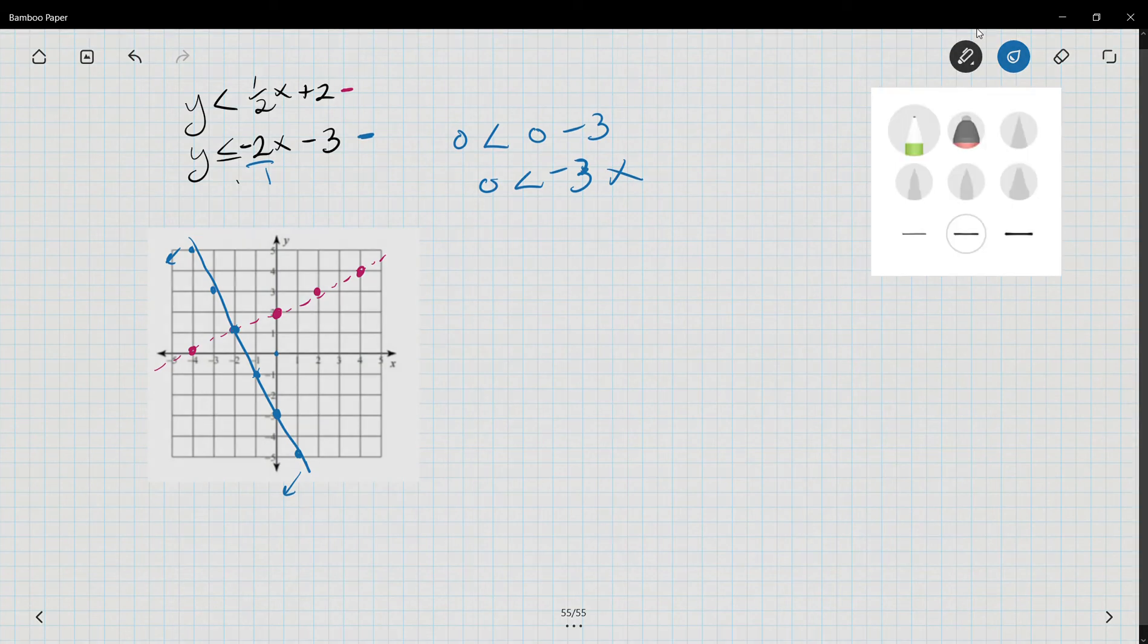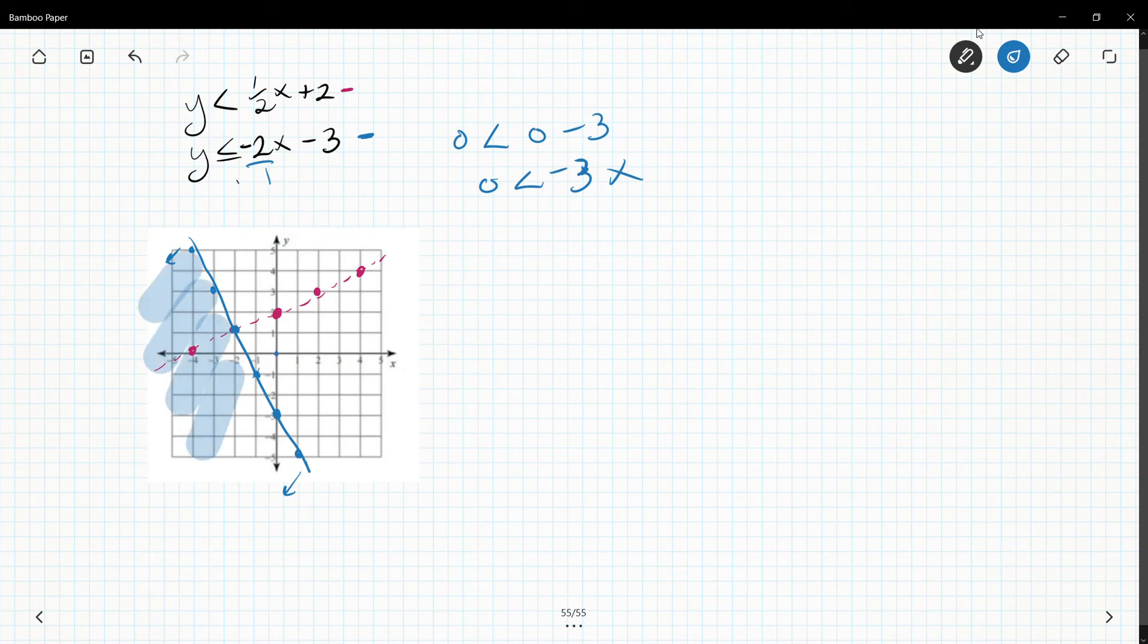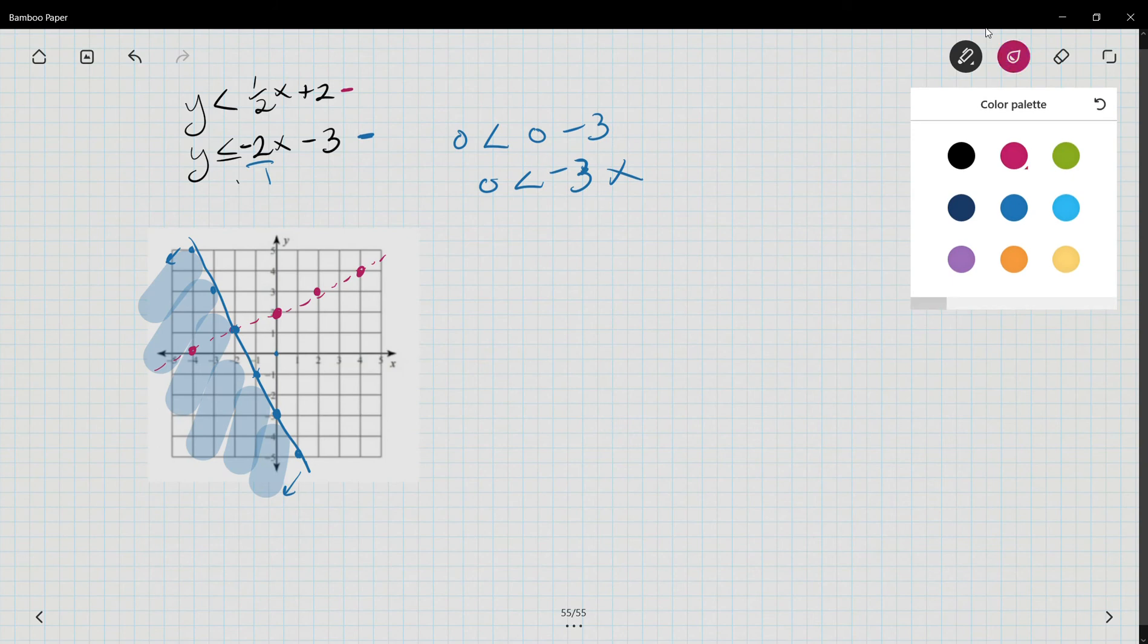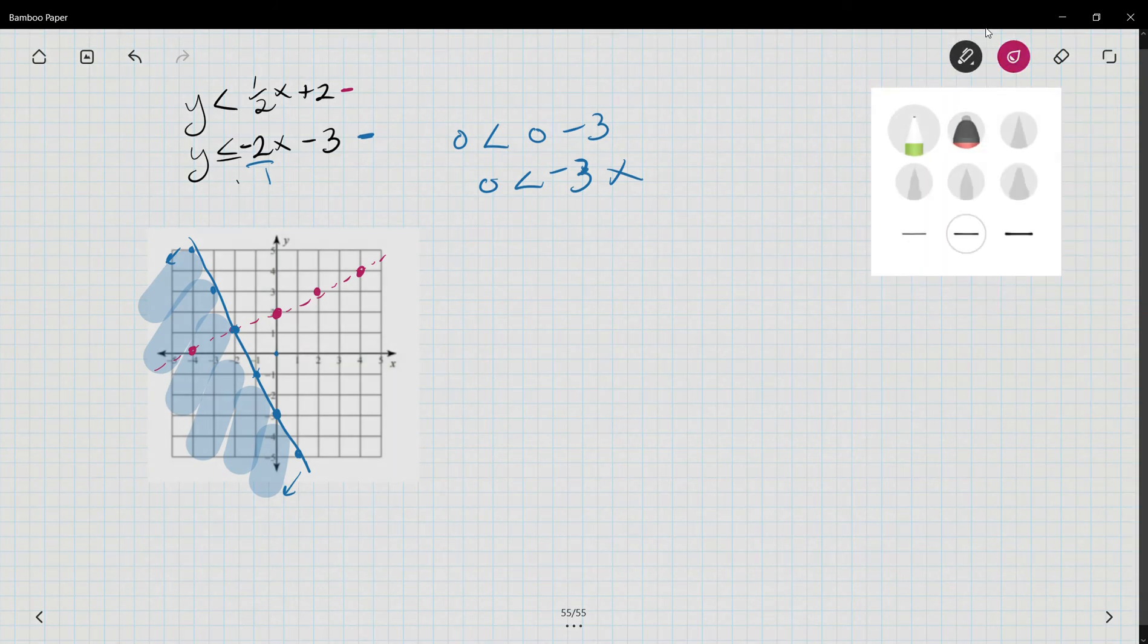The other option is if you have different colors, you can actually shade that side with that color. Typically people only have a pencil though, or a pen, and they don't have this option. So now I'm going to test zero, zero, because it's not part of my red line. Zero is less than zero plus two. Is zero less than two? Yes, it is. So that means I'm going to be shading this side of my line.